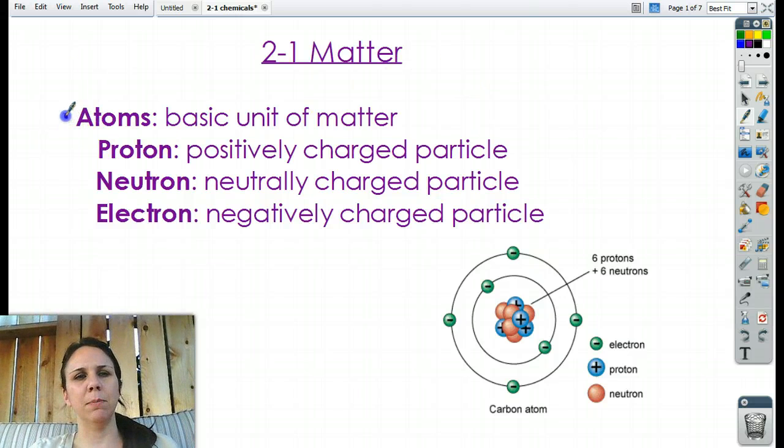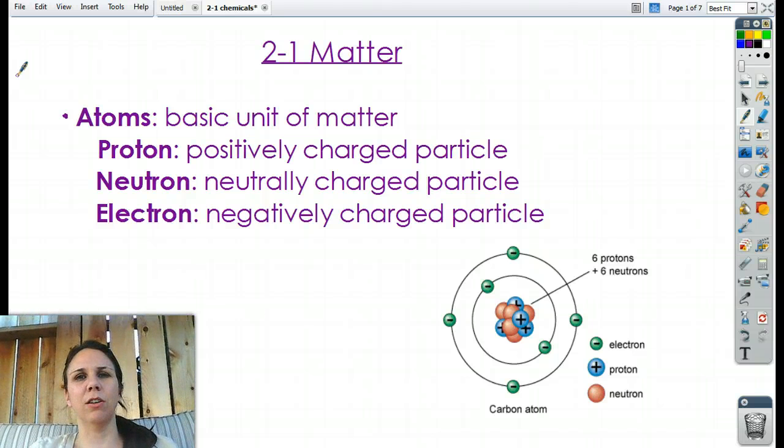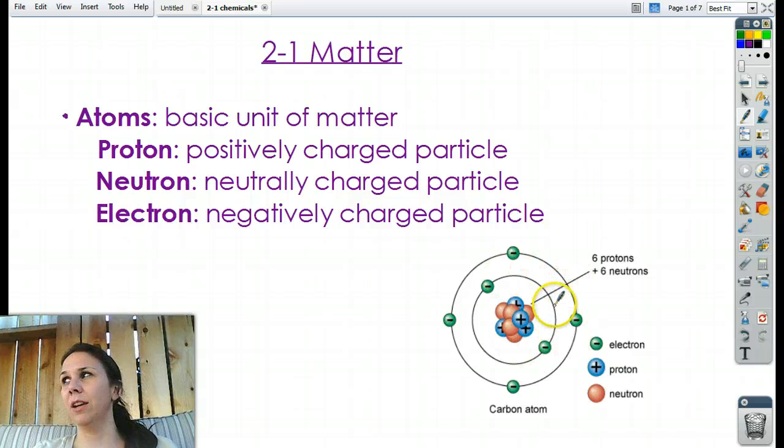All right, first of all, atoms, like we said, make up pretty much every single thing in the whole entire universe. Actually, they do make up everything in the universe. And atoms are made out of smaller things called protons, neutrons, and electrons. So atoms, basic unit of matter.